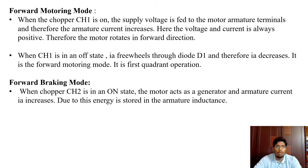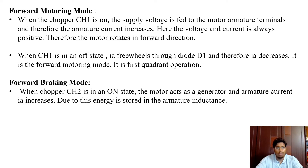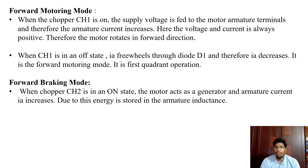In the forward motoring mode, when CH1 is on, the supply voltage is fed to the motor armature terminals and therefore the armature current increases. Hence the voltage and current are always positive, and the motor rotates in the forward direction. When CH1 is in off state, the armature current freewheels through diode D1 and therefore the armature current decreases. This is the first quadrant operation.